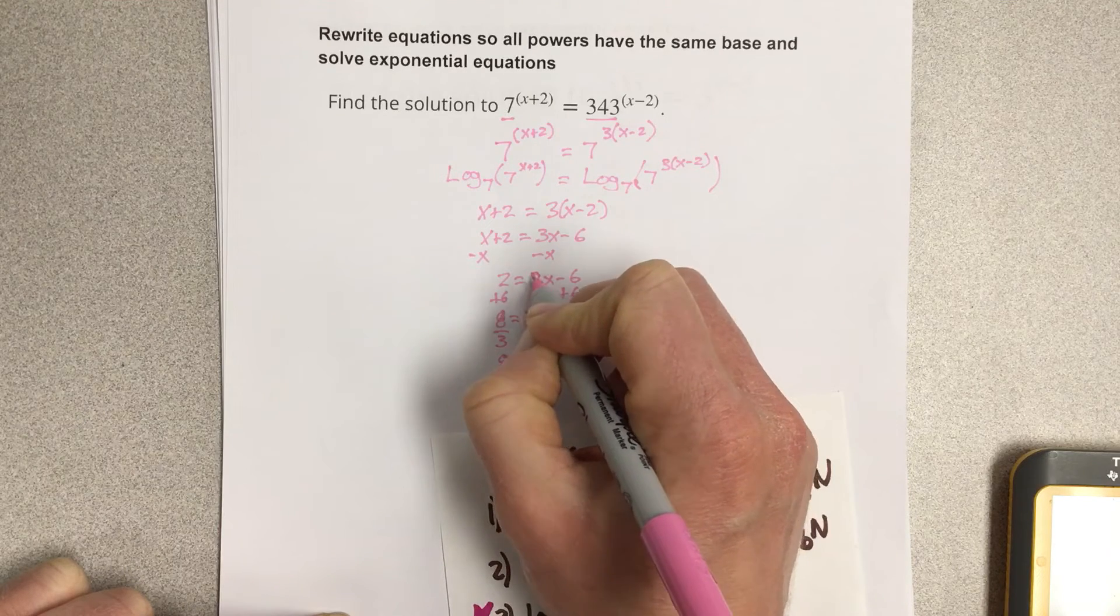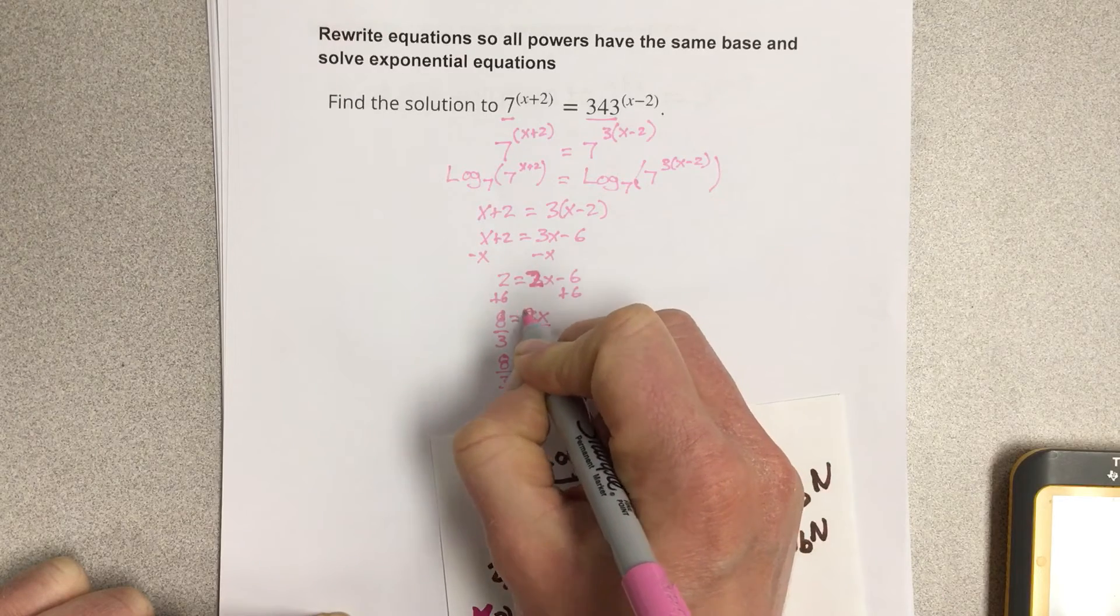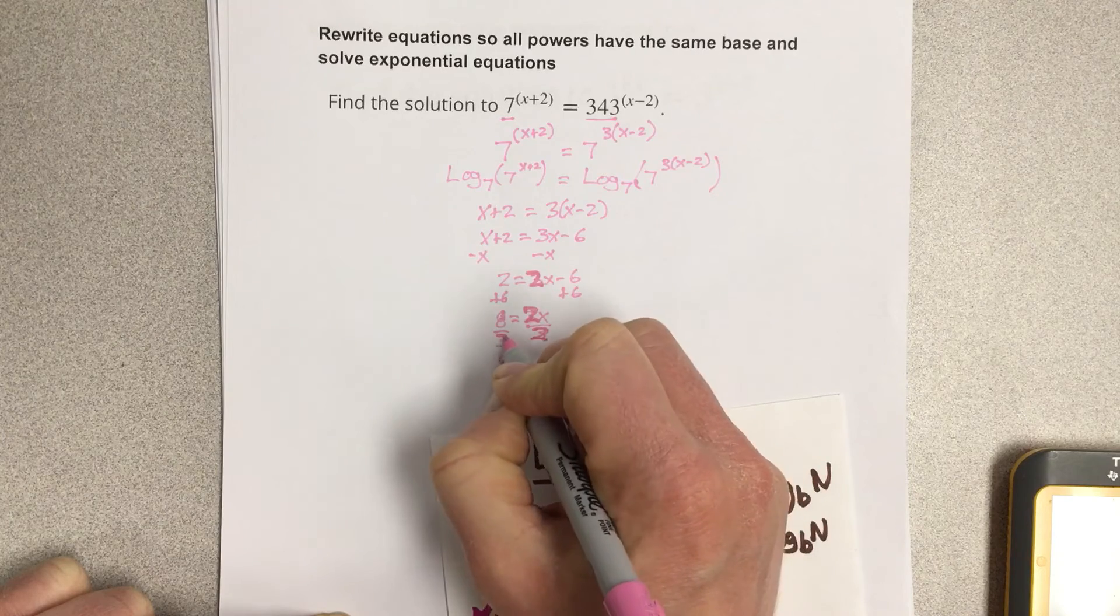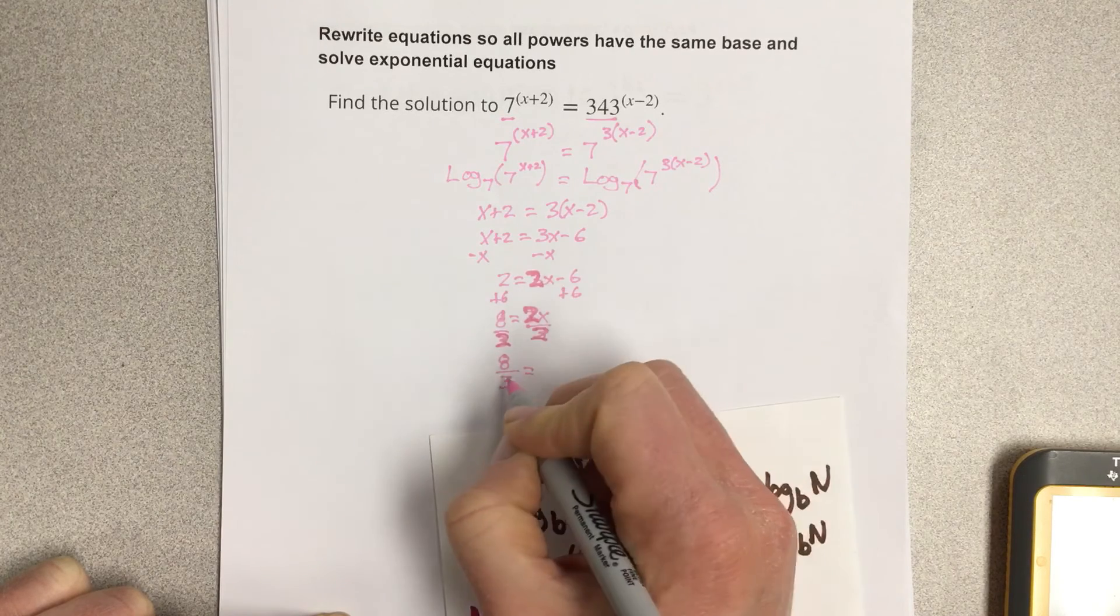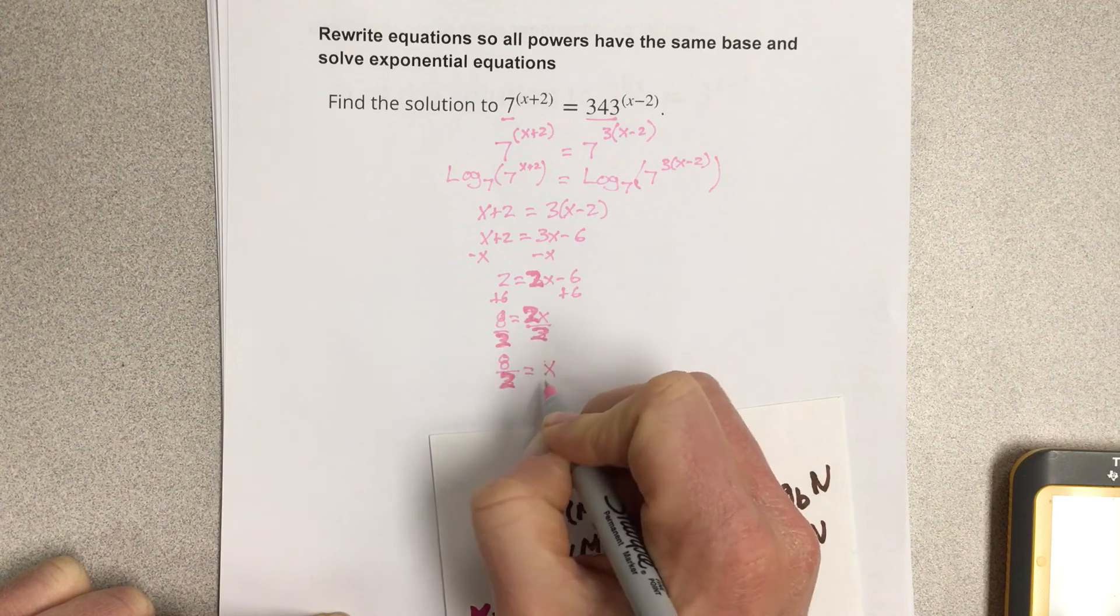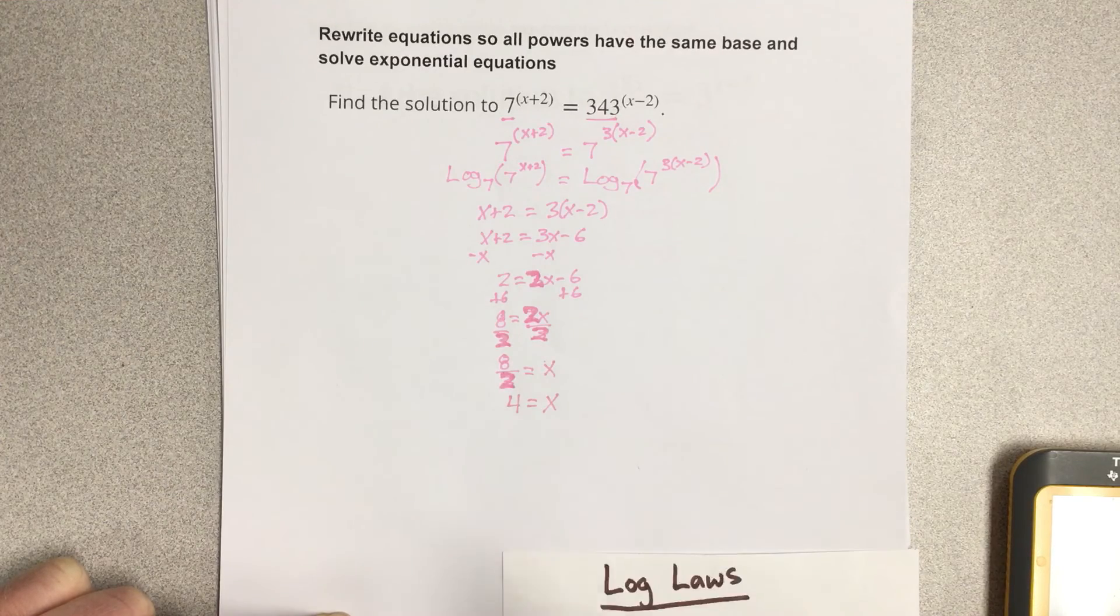This should be 2x. Good catch. So this is 2x. This is 2. So I'm dividing by 2 and that would be x = 8/2 which is 4.